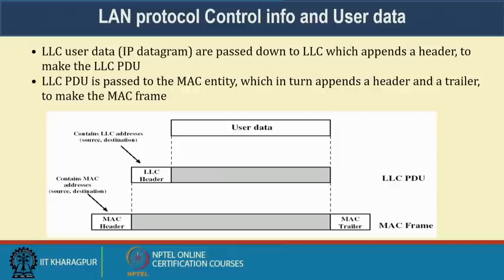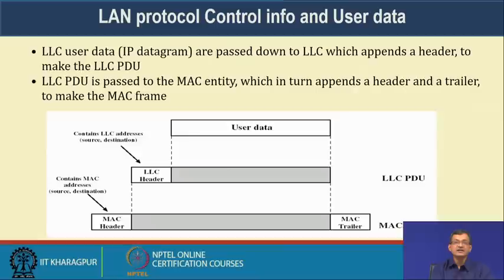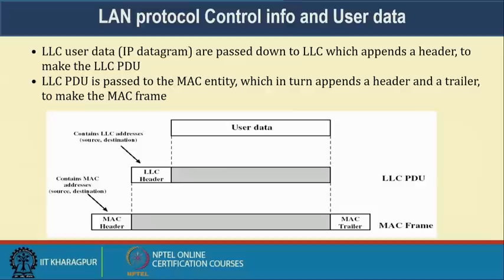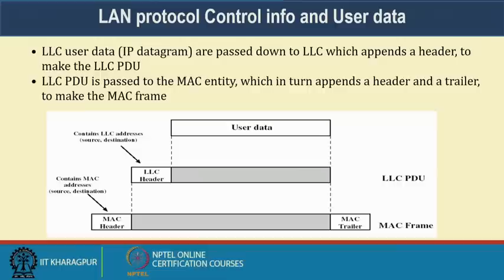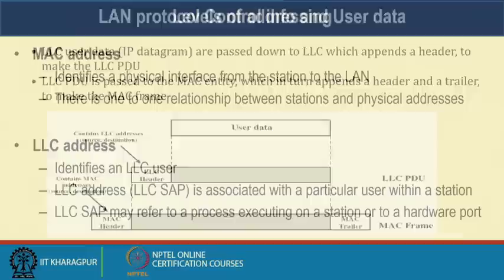Looking at LLC user data: IP datagrams are passed down to LLC, which appends a header to make the LLC PDU. The LLC PDU is then passed to the MAC entity, which appends a header and trailer to make the MAC frame. The user data received from the network layer gets an LLC header added to create the LLC PDU, which becomes the payload for MAC. The MAC then adds a header and trailer — including the destination MAC address — and creates the MAC frame for transmission to the next hop.